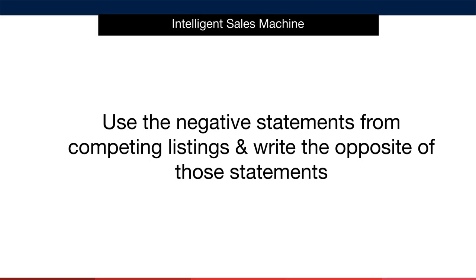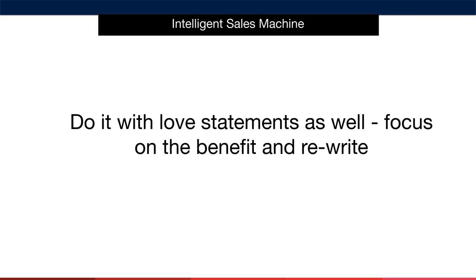This is a great way to build strong bullet points and strong descriptions. Why? When people buy, they have inherent objections or reasons why they don't want to buy. When you write bullet points this way, you're going to remove those objections from the customer's mind as they're reading your description. This is a really strong way to write copy, as it's like you're reading your prospect's minds. You can also do this with love statements too, but instead of creating an opposite statement, focus on the benefit and rewrite that statement.